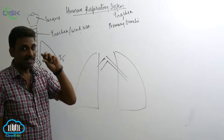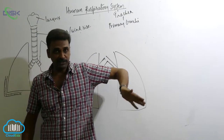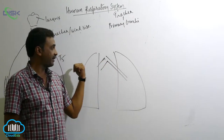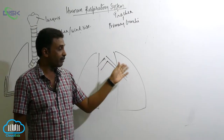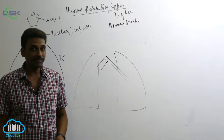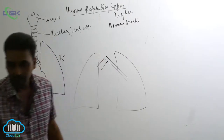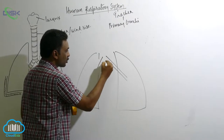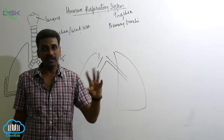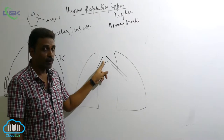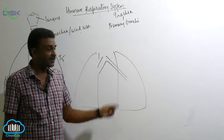The right primary bronchus is only two and a half centimeters in length, whereas the left primary bronchus is five centimeters. The right primary bronchus is short, wide, and less oblique. The left primary bronchus is more oblique, longer at five centimeters.